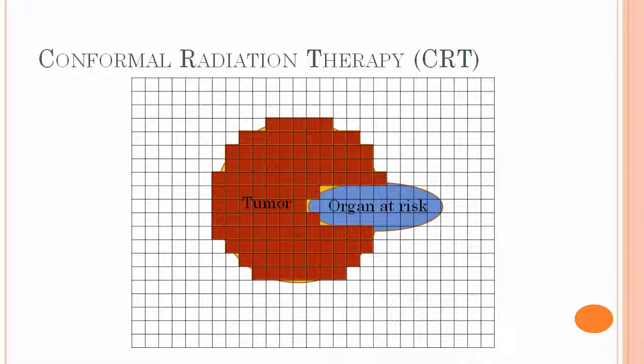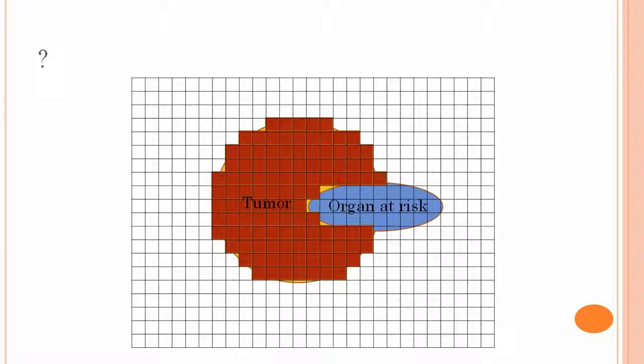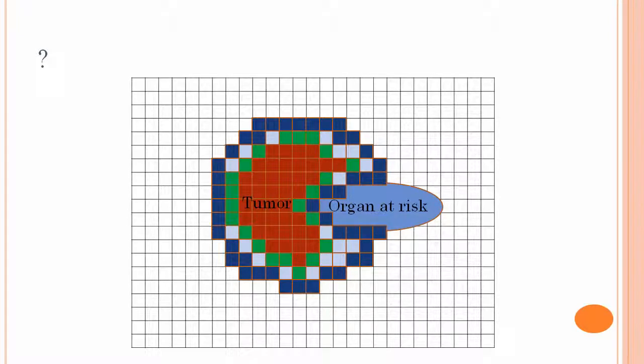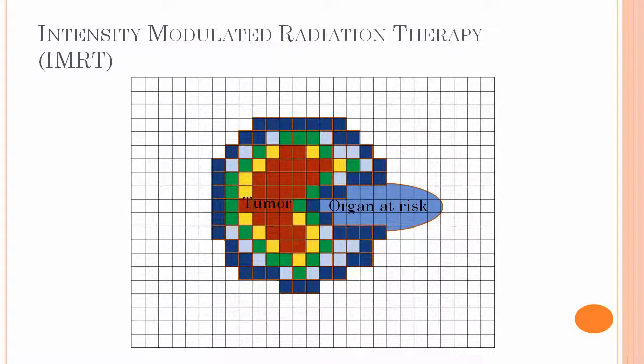In CRT, the intensities of the beamlets are all the same. However, if we allow the beamlets to modulate in intensity at any degree, we have a new type of modality called Intensity Modulated Radiation Therapy, or IMRT. How IMRT works is that it modulates the intensities of each beam, and it uses distinct beam angles to treat the patient.